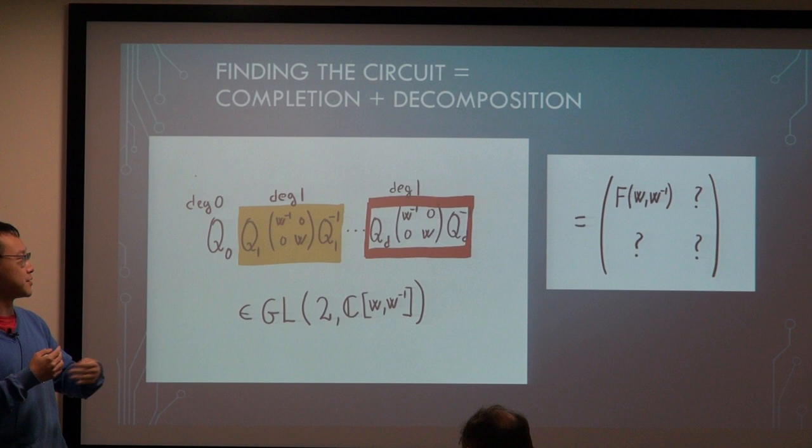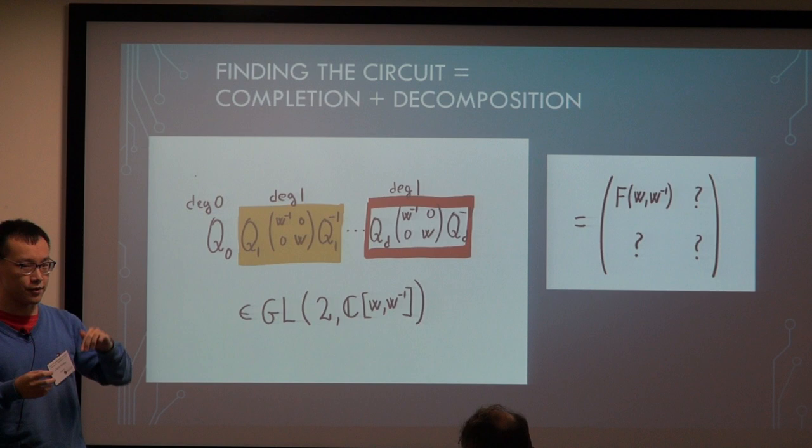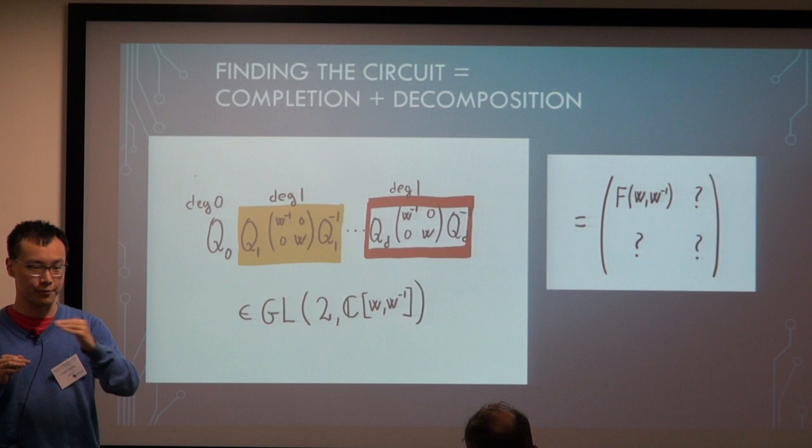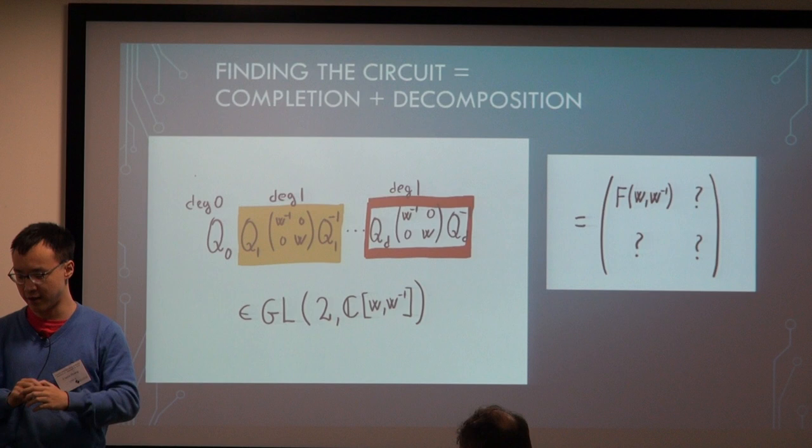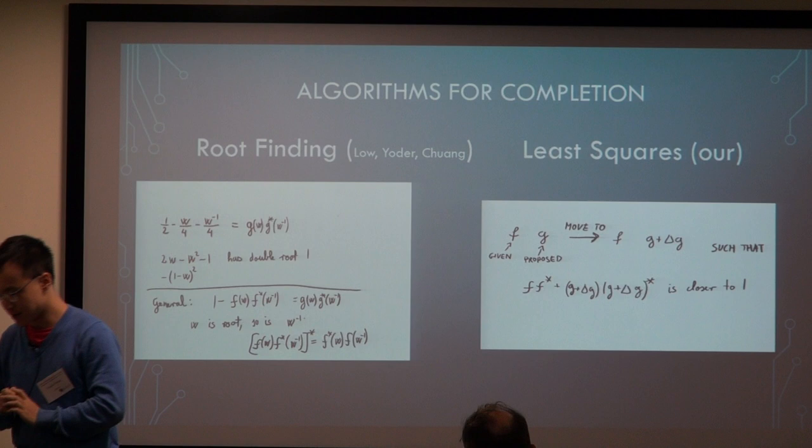The whole problem is that you're given a polynomial that you want to implement, and you're trying to construct this quantum circuit within the quantum signal processing framework. So there are two parts of the problem. The first one is given the polynomial, how would you construct a unitary out of it? That's what we call the completion phase. And also given this high degree unitary element, how do you decompose it into degree one elements, such that these degree one elements can be easily implemented inside the quantum circuit.